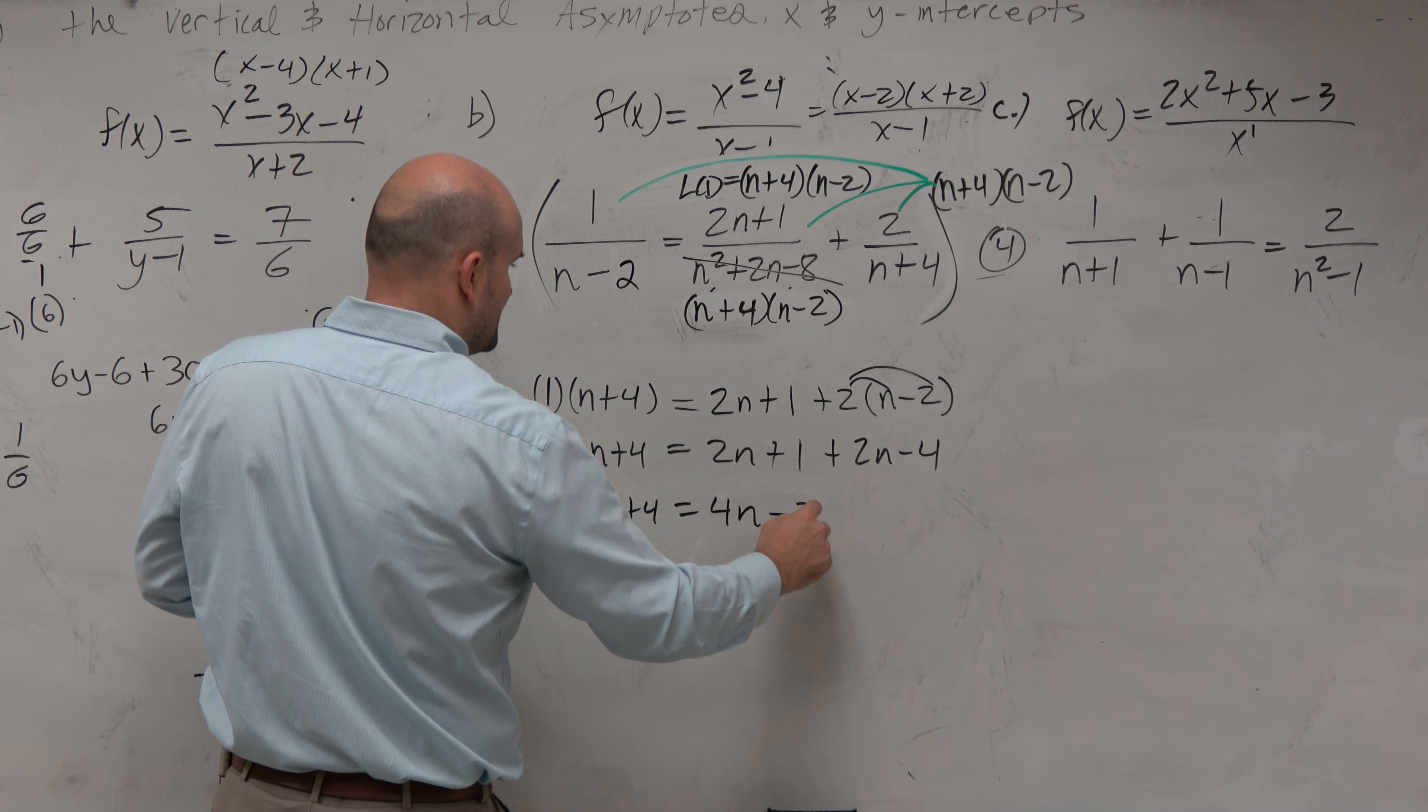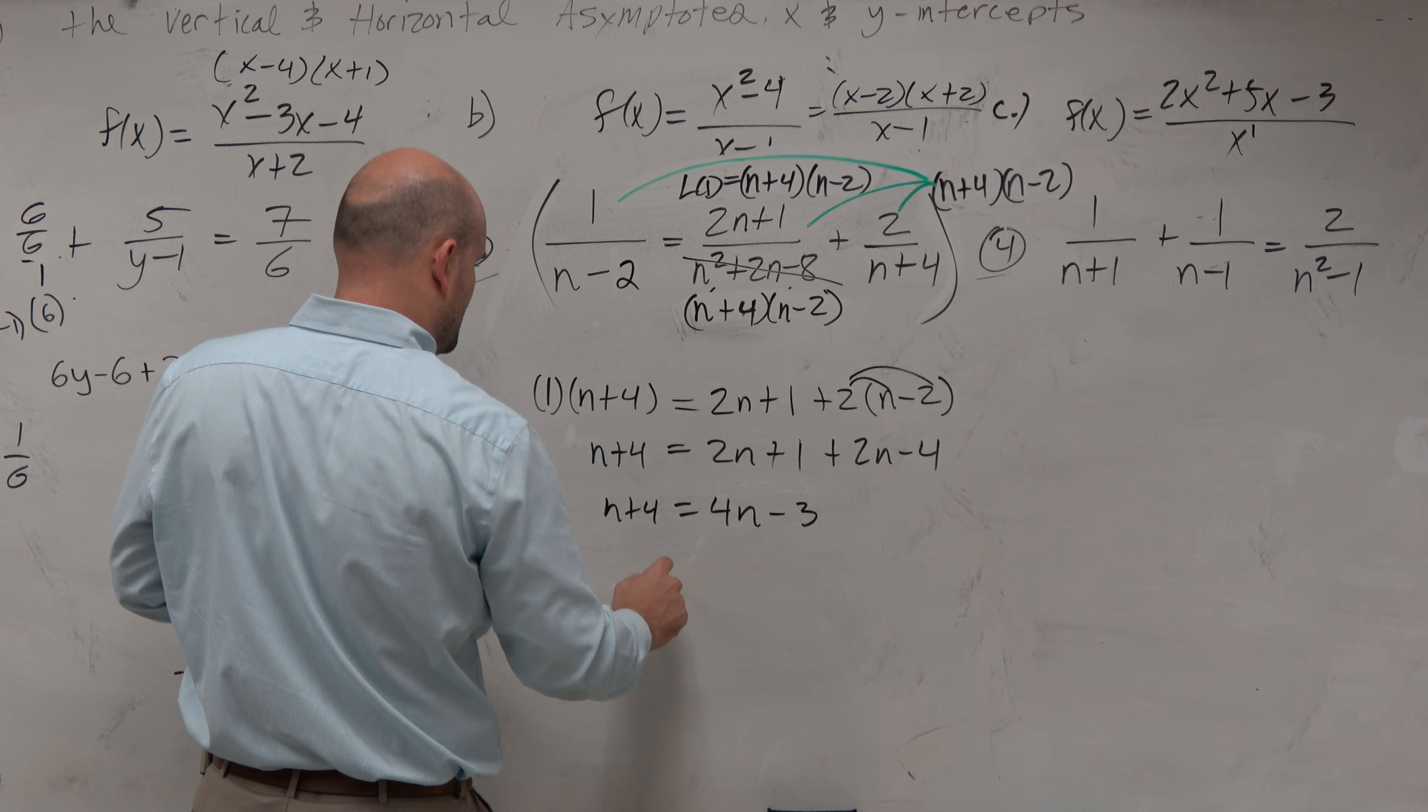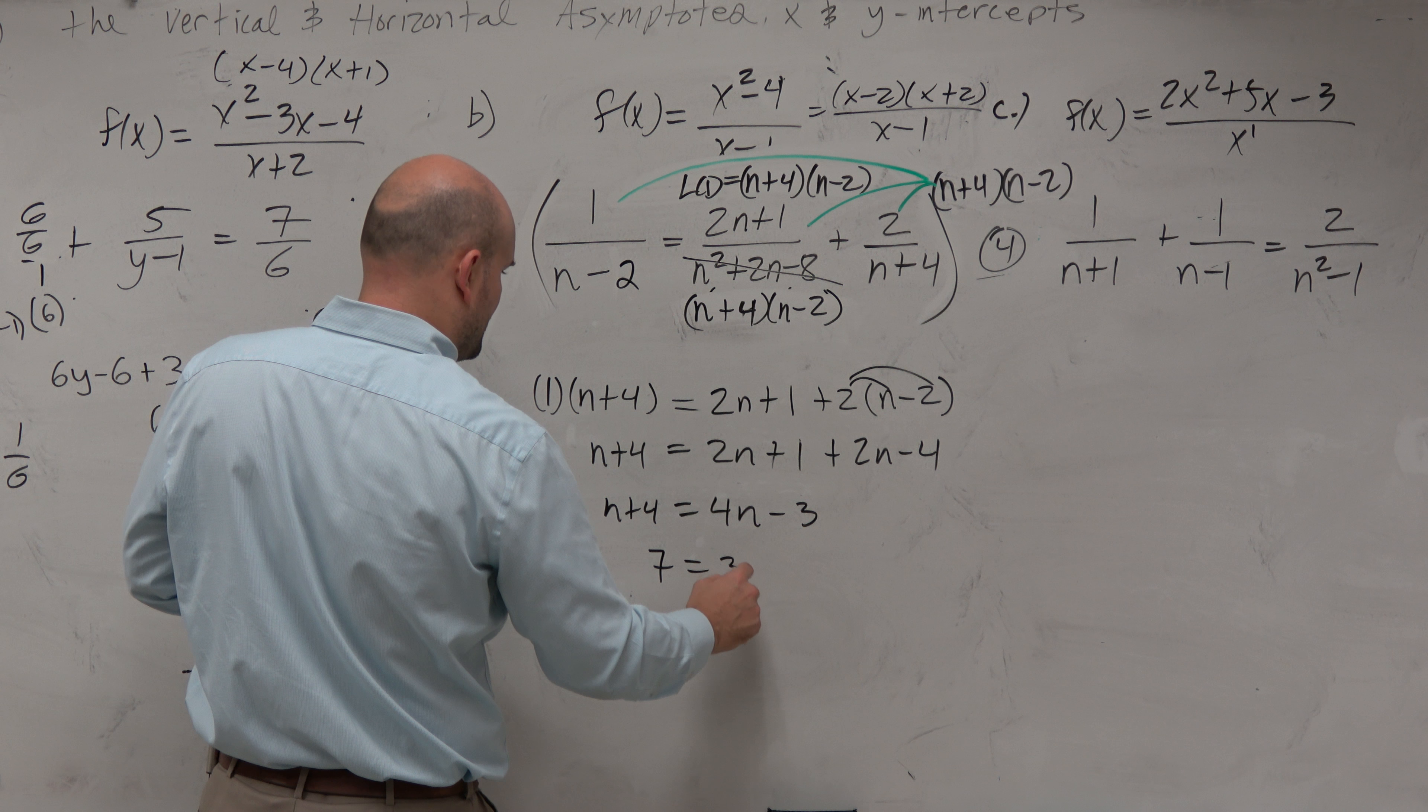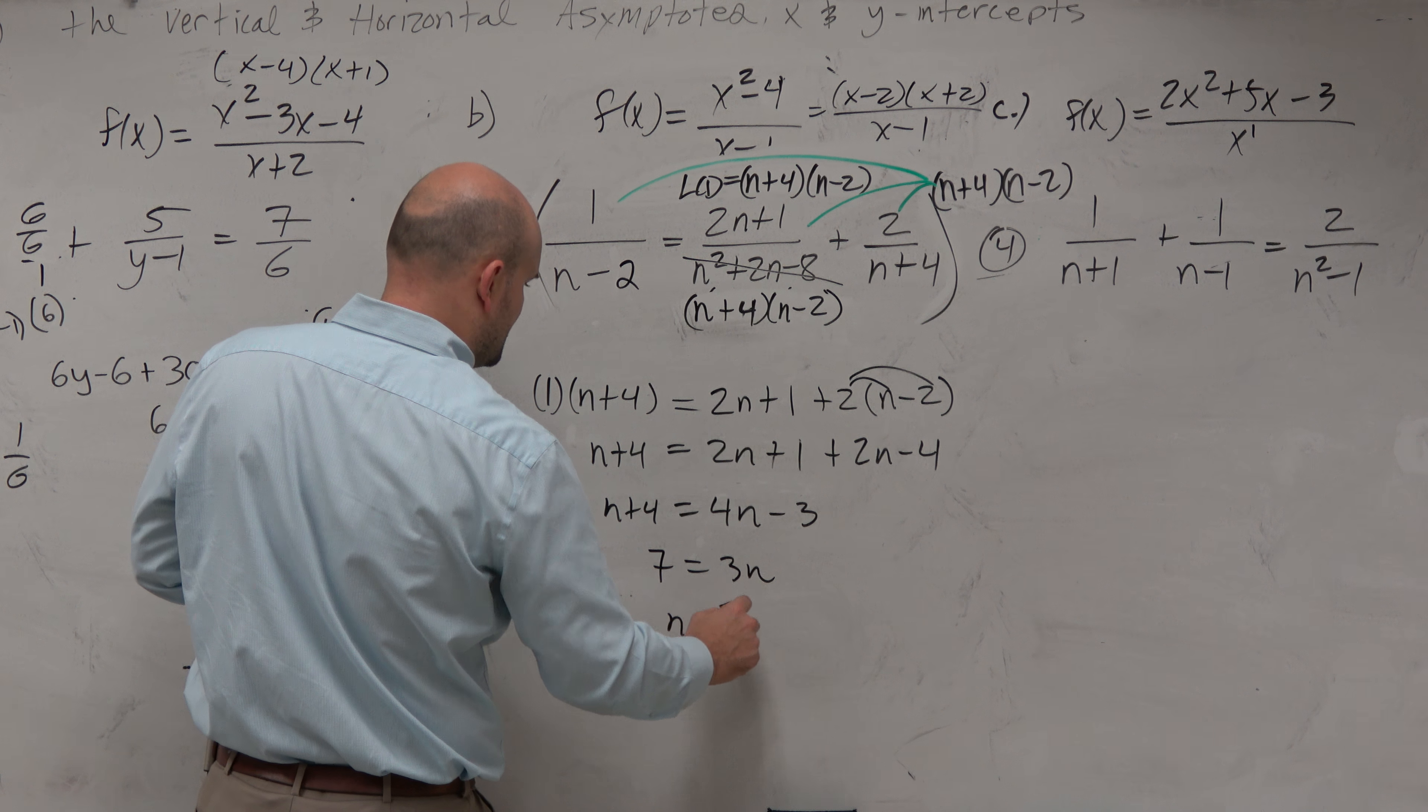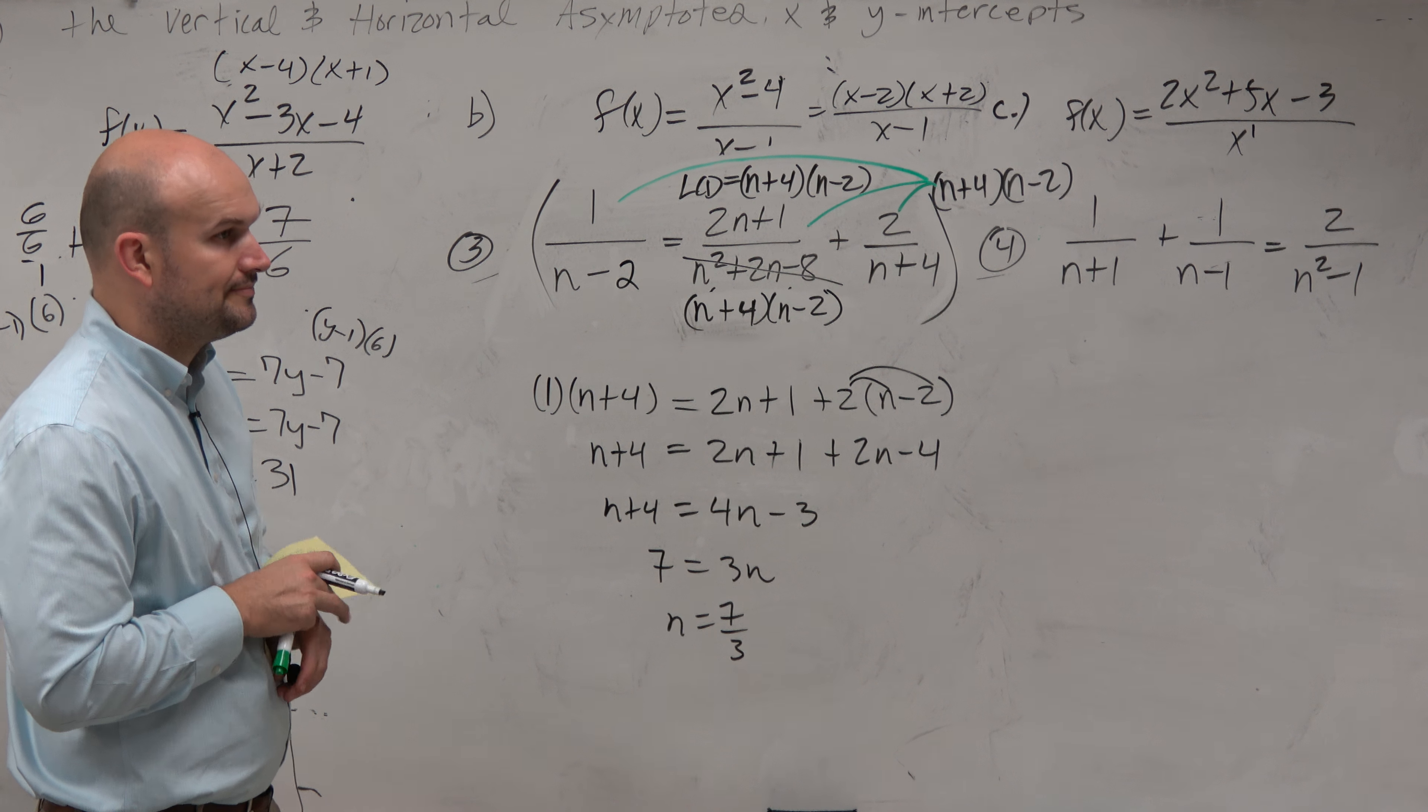We lucked out here with the 1 because we didn't really need to write it, but I just did it so you guys could see. But here, if you don't use the parentheses, you get the problem wrong. So we have n plus 4 equals 2n plus 1 plus 2n minus 4.